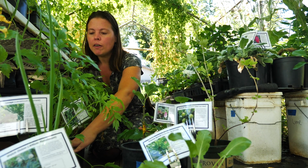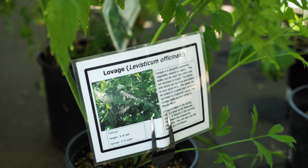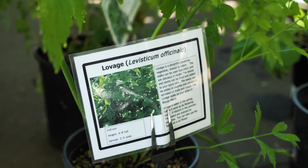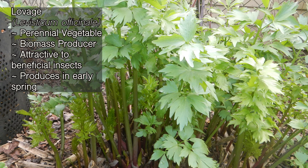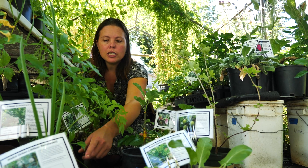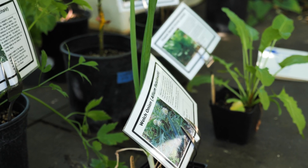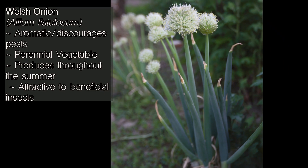Then we have lovage, which is a perennial vegetable that produces a lot of biomass and is attractive to beneficial insects. It's an early spring vegetable, so I like the seasonality of it. Then we've got a Welsh onion, which is aromatic and discouraging for pests. It's tasty and produces green onions I can eat all summer long, and the flowers are also attractive to beneficial insects.